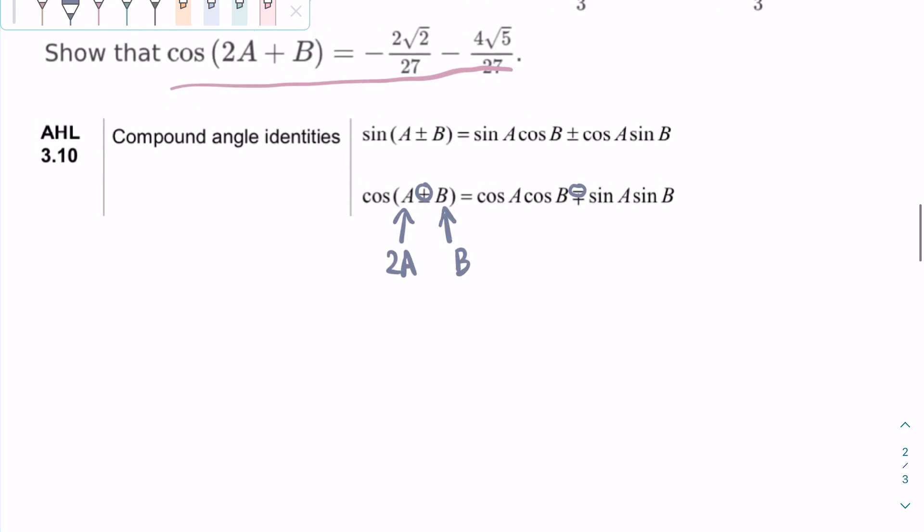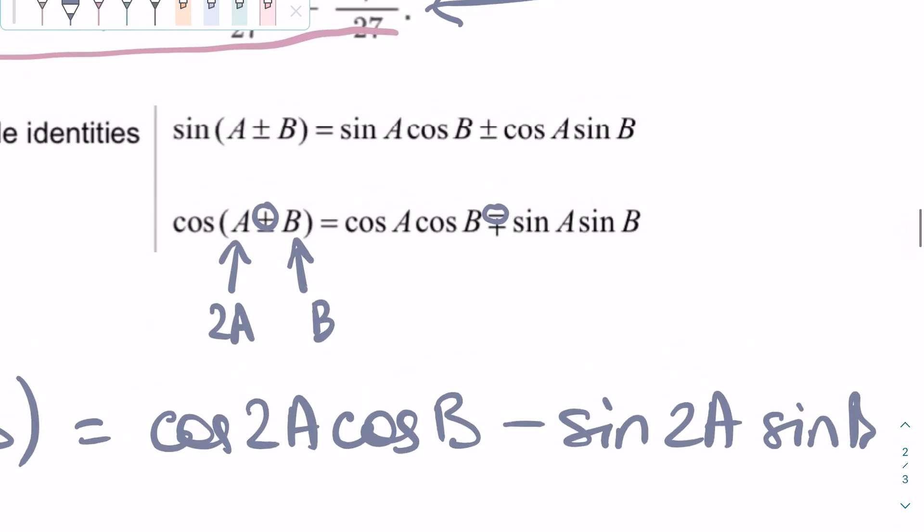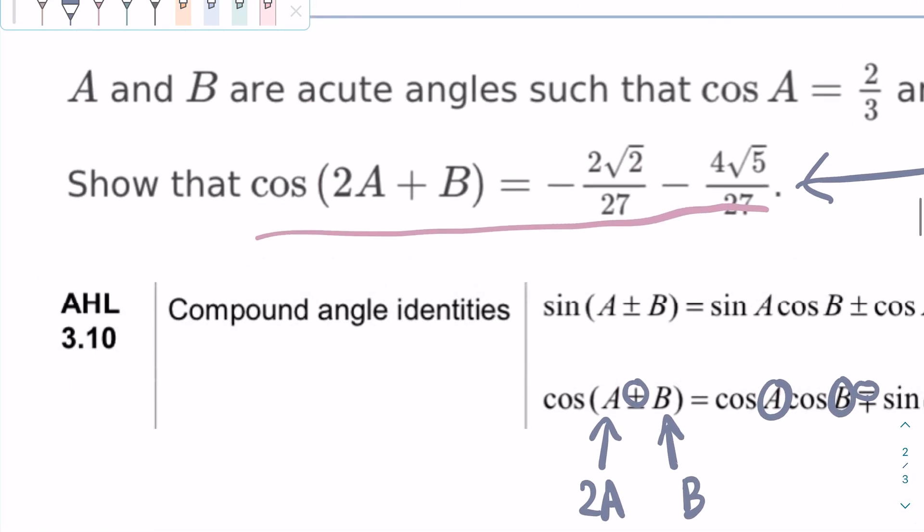This means that we can rewrite this equation like this. Cosine 2A plus B is equal to cosine of 2A times cosine of B minus sine 2A sine B. All I did was replace the arguments A and B with the correct and corresponding arguments in the given.